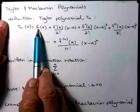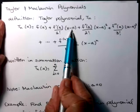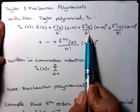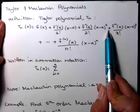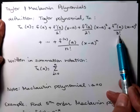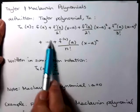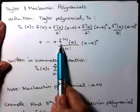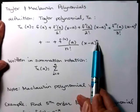So t sub n is f(a) plus f'(a) over 1 factorial multiplied by (x-a) plus f''(a) over 2 factorial times (x-a) squared, plus the third derivative evaluated at a divided by 3 factorial times (x-a) cubed, plus however many terms go in there, plus this last one will be the nth derivative of your function evaluated at a divided by n factorial times (x-a) to the n.